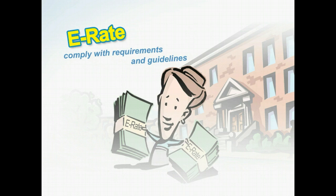Many schools and libraries receive special funding for their Internet access through a program called e-rate. The Federal Communications Commission states that before schools and libraries can receive their e-rate funds, they must comply with any requirements and guidelines set forth through CIPA. These guidelines include adopting a technology protection measure and implementing an Internet safety policy.